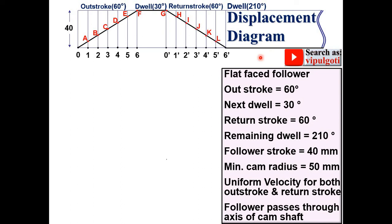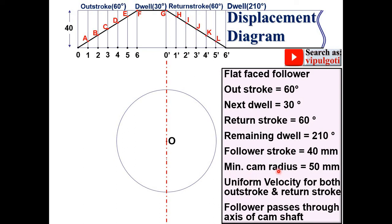Now start the cam profile. Randomly select any one point and label it O. Draw a vertical line through O as the center line. Draw a circle with radius equal to the minimum cam radius of 50 mm — this is called the base circle. Since a flat face follower is given, draw the symbol of the flat face follower at the top. The direction of cam rotation is not mentioned, so assume it is clockwise. Therefore, take the angles in the anti-clockwise direction — opposite to the rotation of the cam from the reference line.